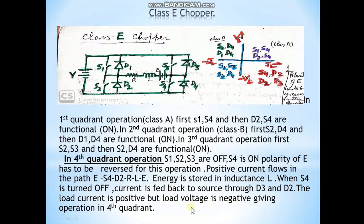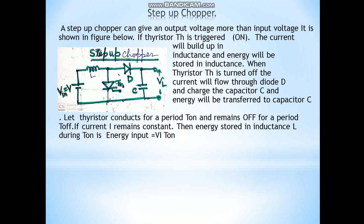So in fourth quadrant operation, load current is positive and load voltage is negative. Now I will discuss the step-up chopper. For a step-up chopper, the output voltage is greater than the input voltage — that means the average value of the output is greater than the input voltage. The circuit diagram is shown in the figure.